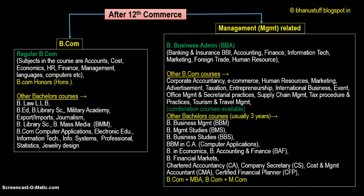There are many management-related courses. The first is BBA, bachelor's in business administration, which is considered one of the top bachelor's courses alongside B.Tech. Many students who don't get into engineering opt for BBA. Specializations include banking and insurance (BBI), accounting, finance, information technology, and marketing. Marketing involves making people aware of your product, spreading the word, and overcoming competitors through strategies like buy-one-get-one offers and advertisements.